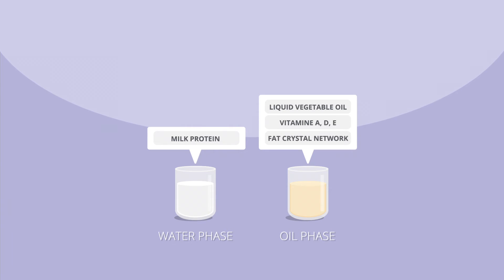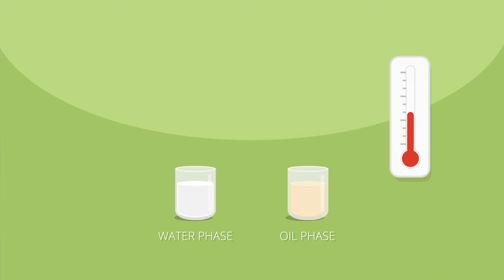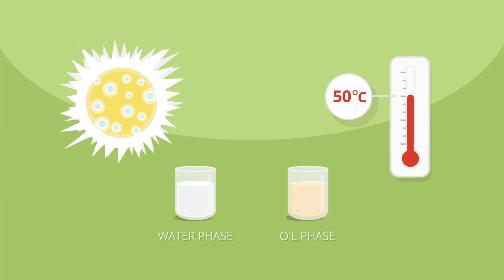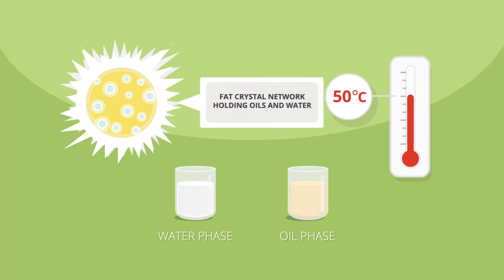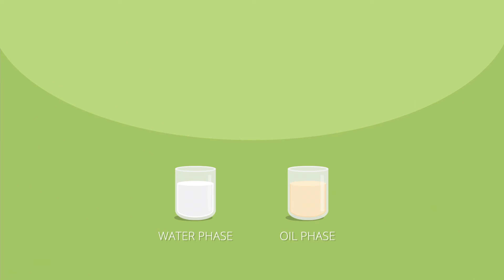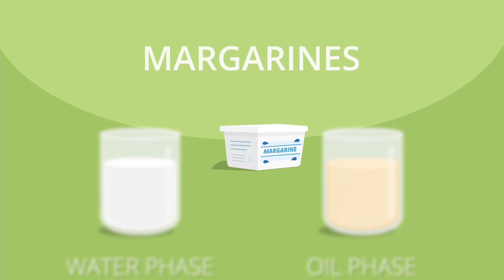Due to its high melting point, palm oil provides the crystals in which the other liquid oils and water droplets are held. Therefore, hardened fats are not necessary to use. Because of its properties, palm oil is widely used to create margarines.